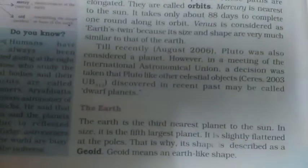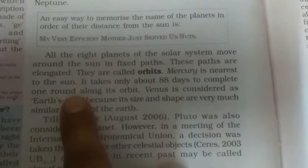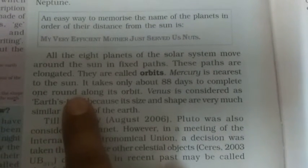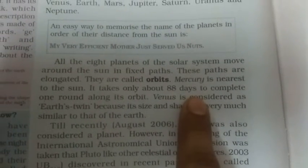These planets are revolving around the sun in a particular path. The elliptical path of the planets is known as an orbit, and the planets move around the sun in this orbit. Mercury is the nearest planet to the sun, so it takes only 88 days to complete one revolution around the sun, compared to Earth which takes 365 days.